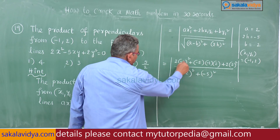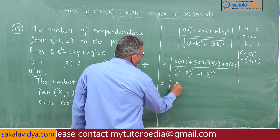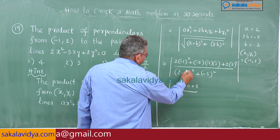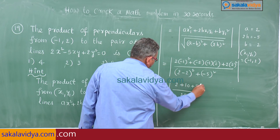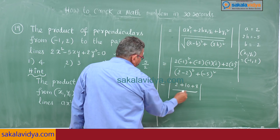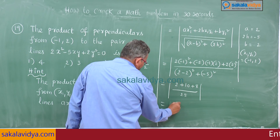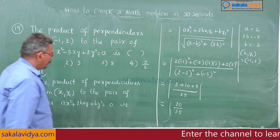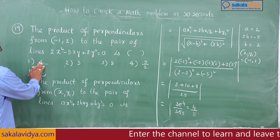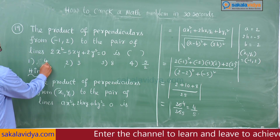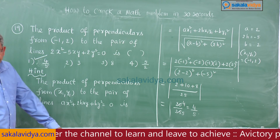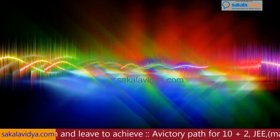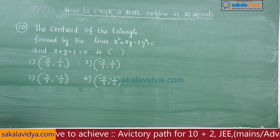Now calculating: (−1)² = 1, so numerator = 2(1) + (−5)(−1)(2) + 2(4) = 2 + 10 + 8 = 20. Denominator = √25 = 5. So 20/25 = 4/5. Therefore the first option, 4/5, is the right answer.